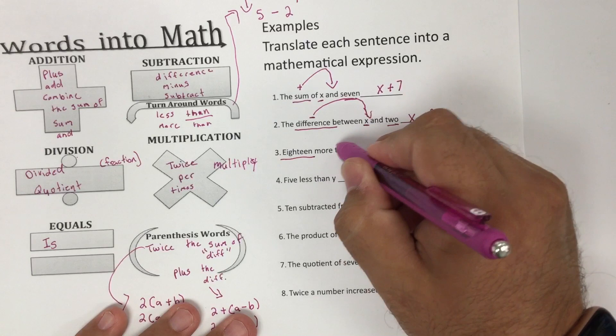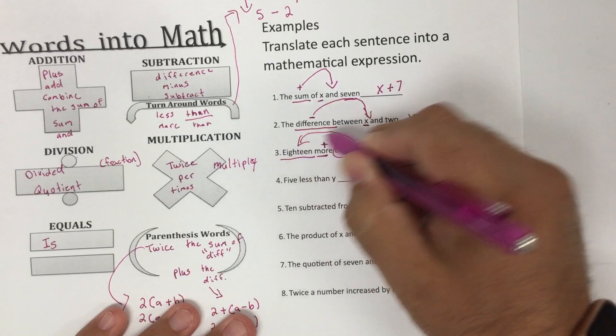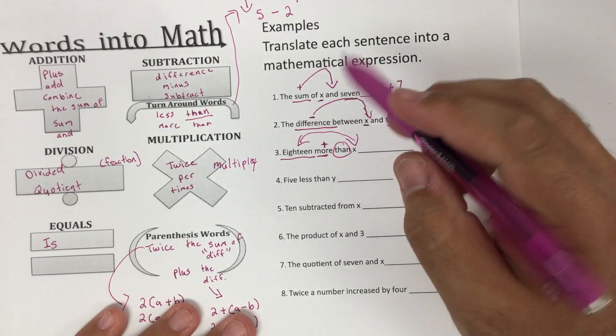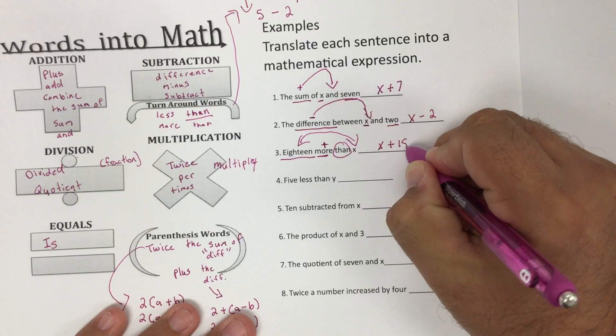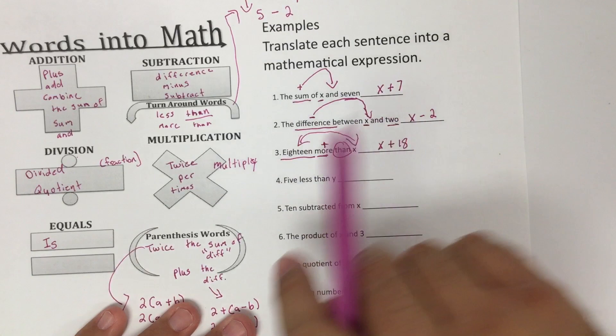18 more than X. Now be careful. More means to add, but there's the than. So this is actually a flip word. So it almost looks like it should say 18 plus X, but because it's a flip word, it's actually going to be X plus 18. More means to add, but then because it's more than, I flip it around.